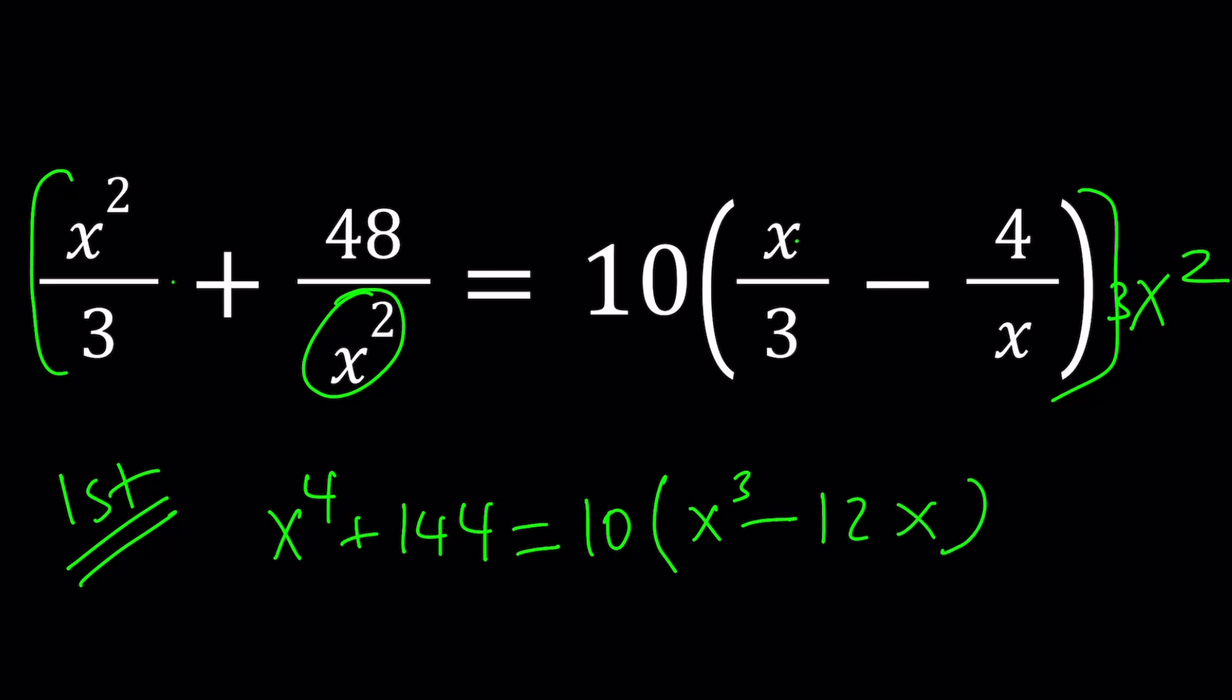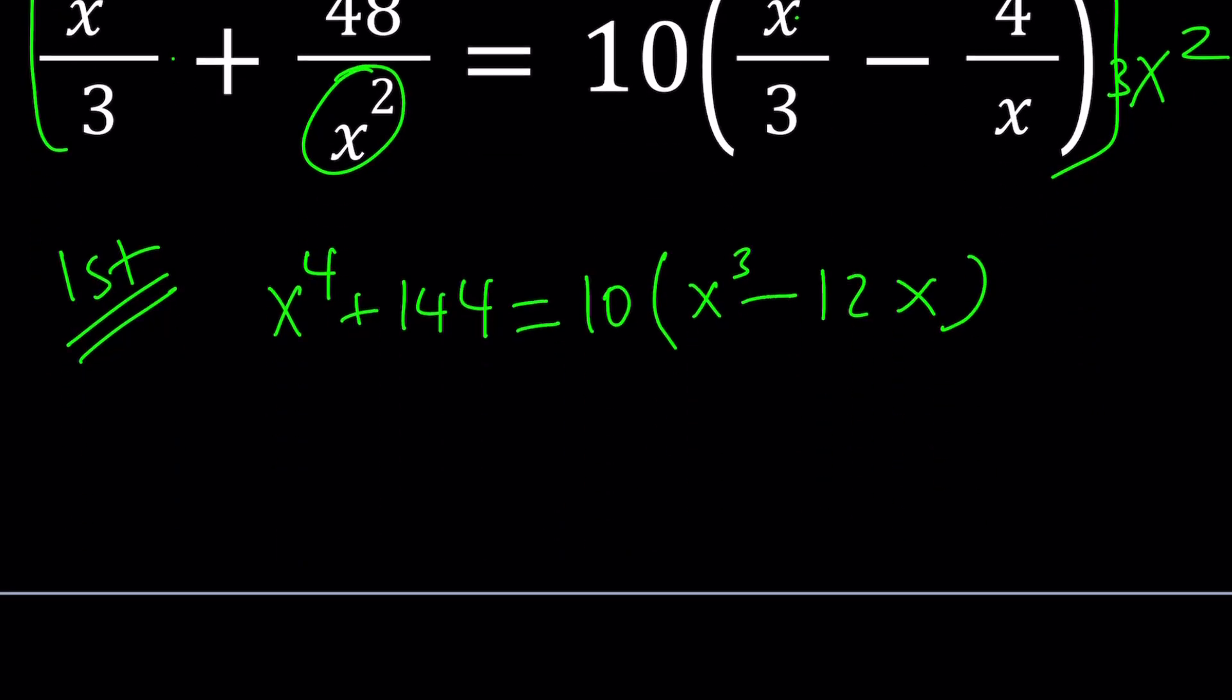Probably making a common denominator would be a little easier, but I kind of find this easy. Now, let's go ahead and distribute everything. x to the 4th plus 144 equals 10x cubed minus 120x.